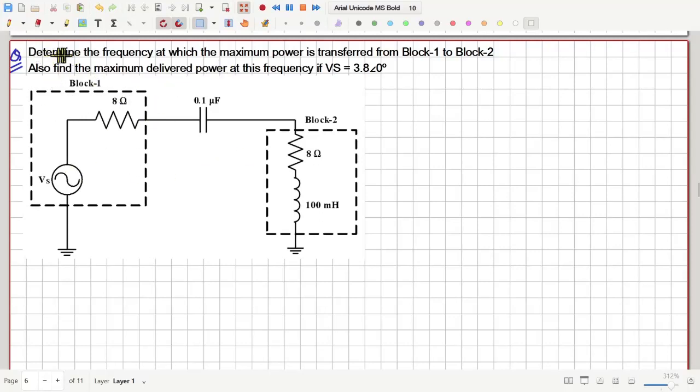In this question, we have to find the frequency of the source at which the maximum power is transferred from block 1 to block 2. Here is our block 1 and here is our block 2.